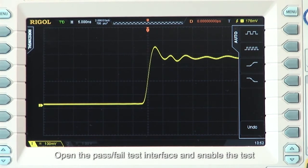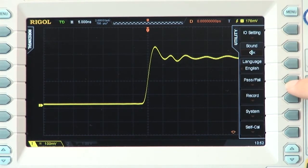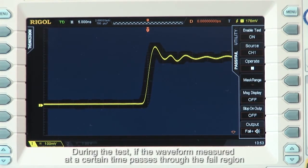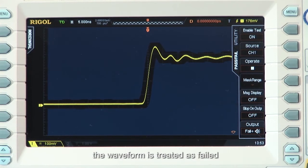Open the pass-fail test interface and enable the test. The blue shadow region indicates the failed region. During the test, if the waveform measured at a certain time passes through the fail region, the waveform is treated as a failure.